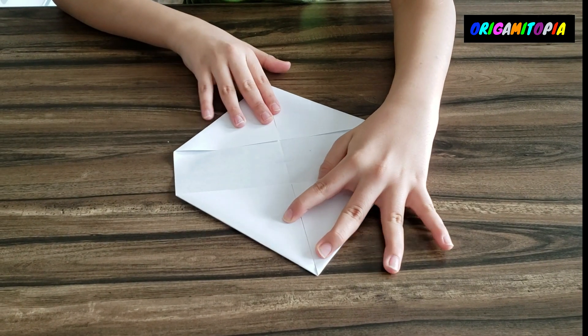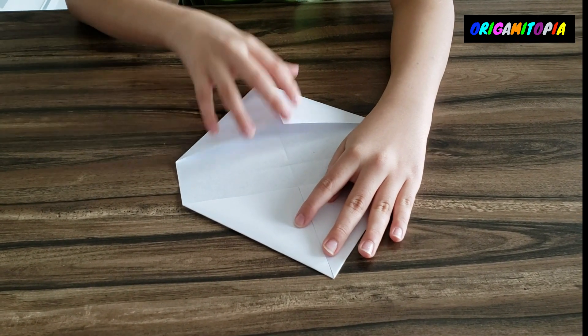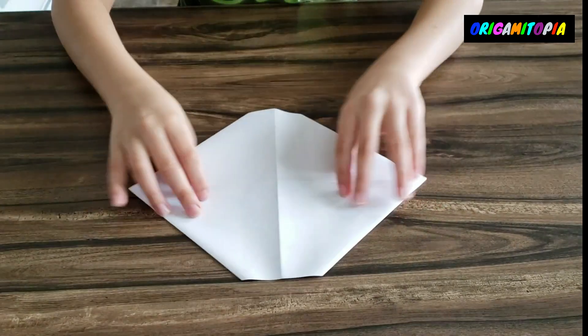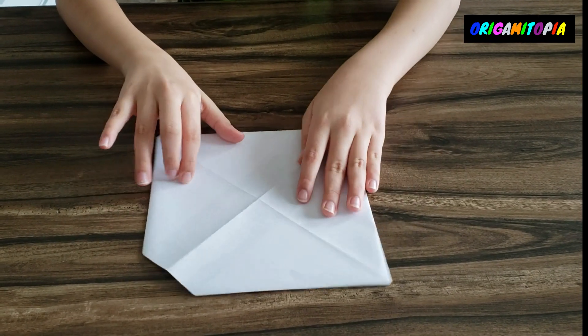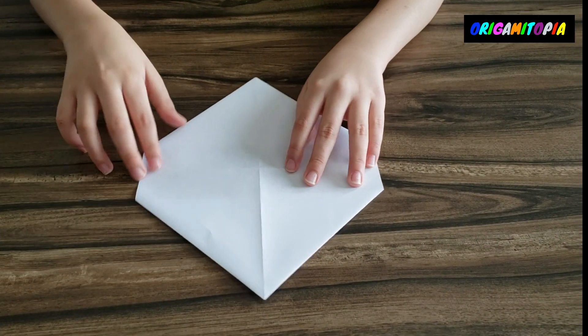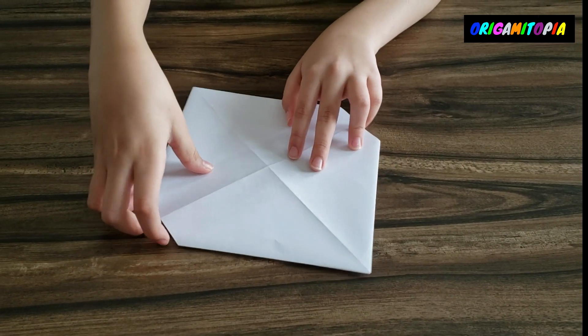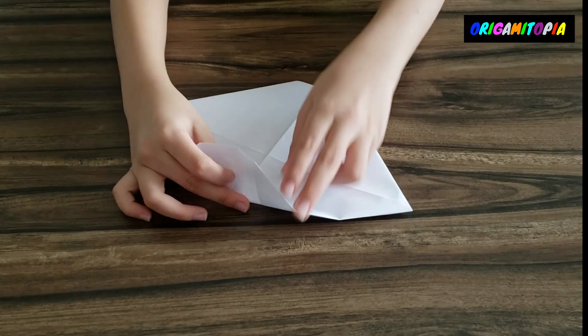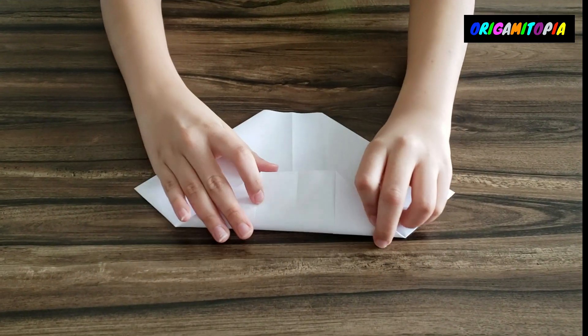So you should have something that looks like this. Now turn the model over and you'll notice you have this faint line right here. So you're going to take this edge and fold it like this right on that line.